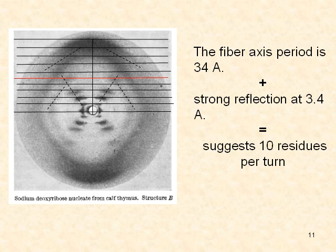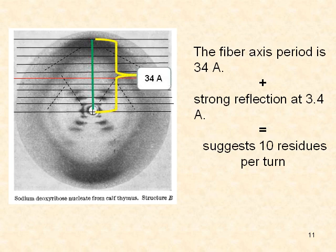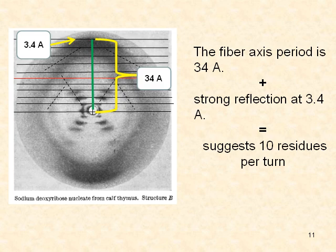Franklin and Gosling mention several important cues in their X-ray diagram that stimulated the findings of Watson and Crick in a helical model. First, the fibre axis period is 34 angstroms strong. And there is a strong reflection at the 10th layer line at about 3.4 angstroms, which suggests that there are 10 residues per turn of the helix.